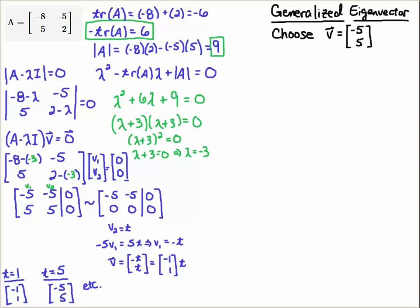Alright, now let's find the generalized eigenvector. So we have one eigenvector. Let's find the second eigenvector. I'm going to choose minus 5, 5. You could pick minus 1, 1. I'm going to pick minus 5, 5 because I see all these 5s in here. And I think it's going to make my computations easier, as you'll see in a moment.